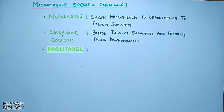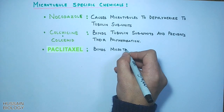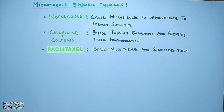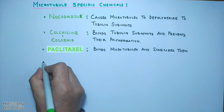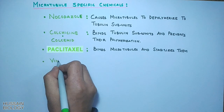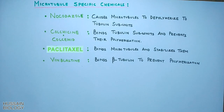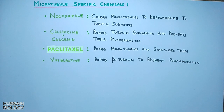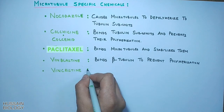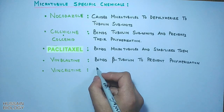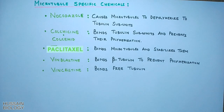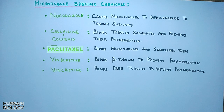Then we have Paclitaxel — it binds microtubules and stabilizes them. Then there is Vinblastine, which binds beta-tubulin to prevent polymerization. And finally we have Vincristine, which has the capability to bind free tubulin units to prevent polymerization.